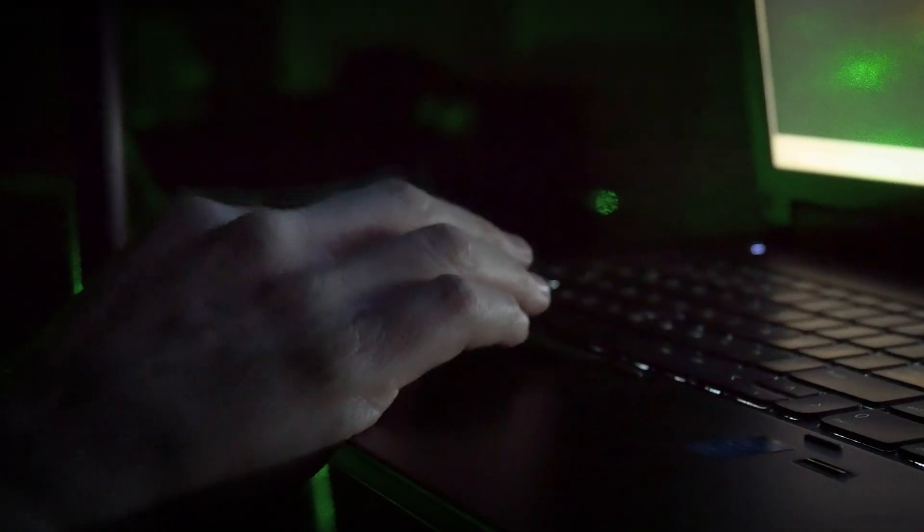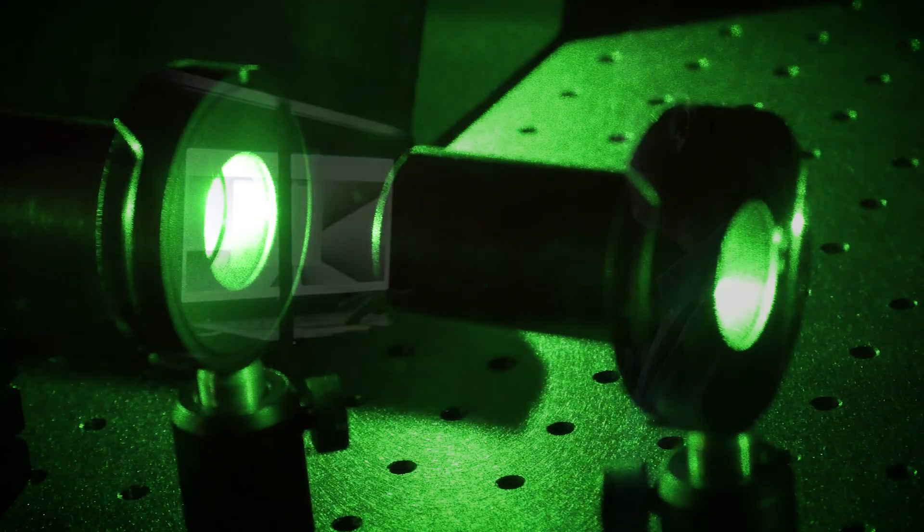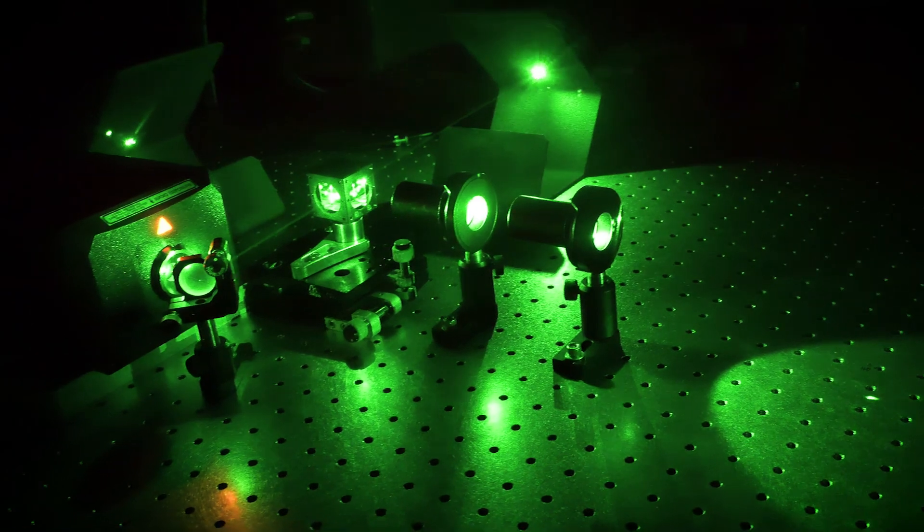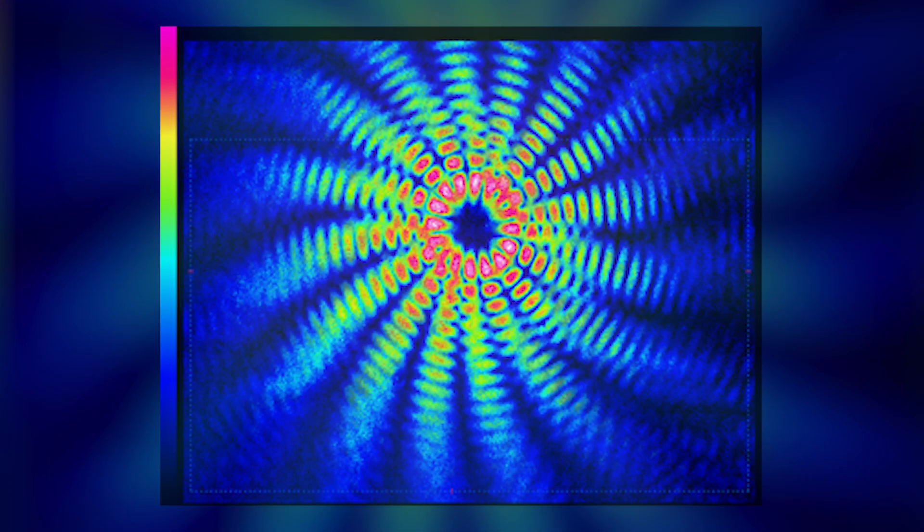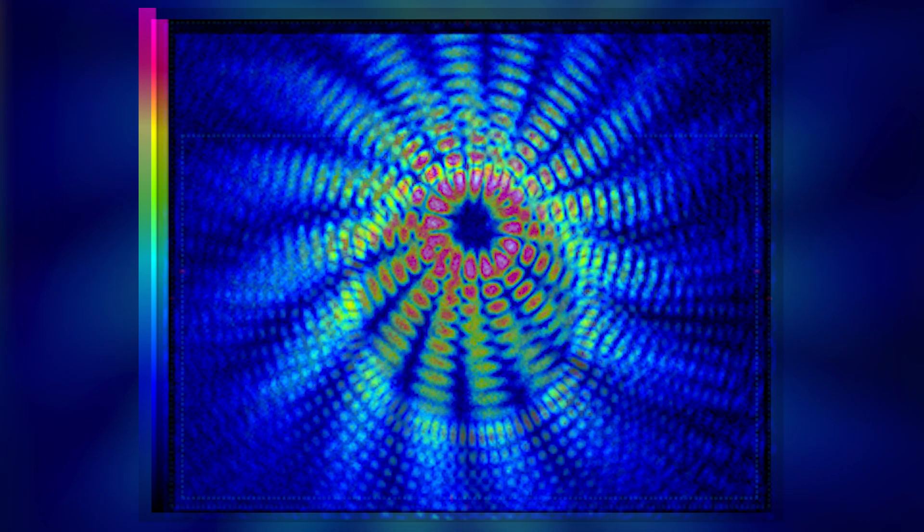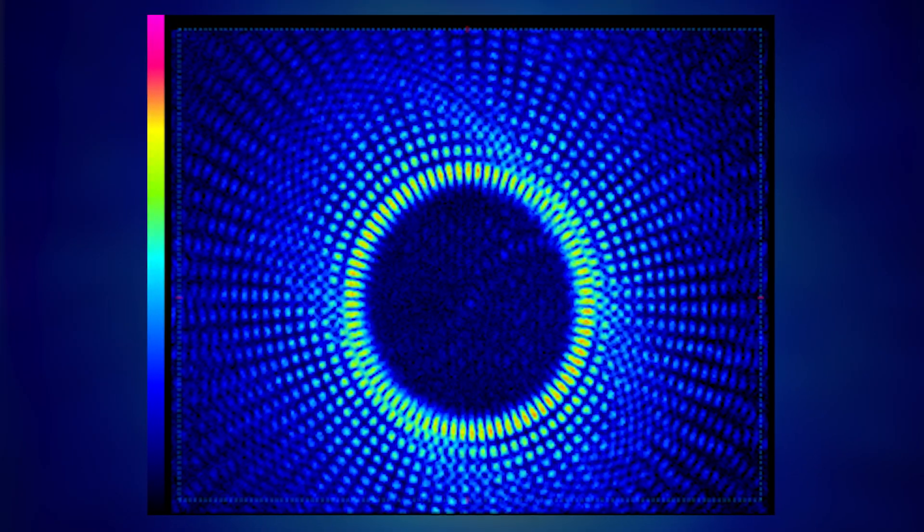We are producing vortices of light in this laboratory. Vortex beams are essentially tornadoes of light. When two of them interfere, they can form these beautiful interference patterns called pedal patterns.